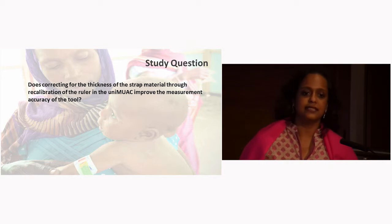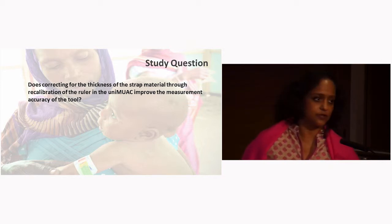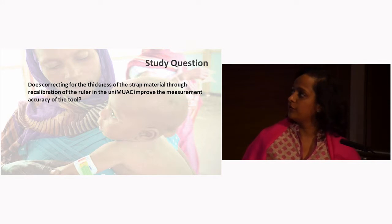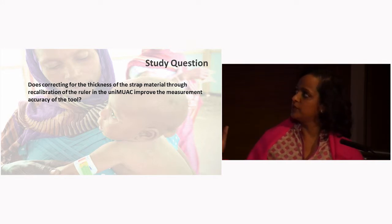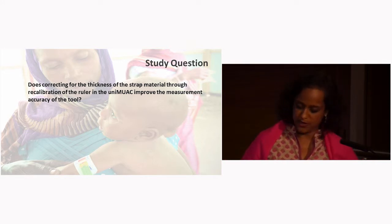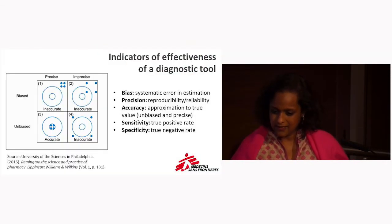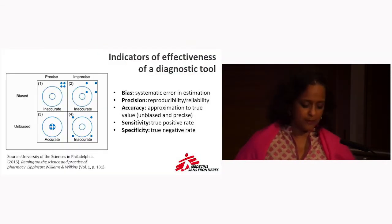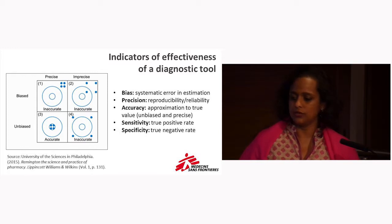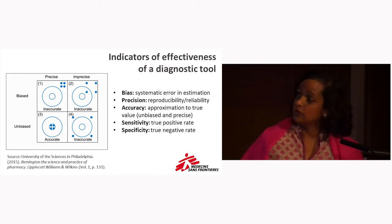So we conducted a standardization exercise, essentially to look at whether correcting for the thickness of the strap through this recalibration of the ruler actually improved its measurement accuracy. So how do we even think about measurement accuracy in a tool? There are various parameters, and I'll go very quickly through these.